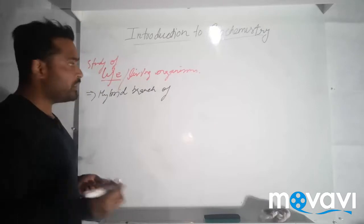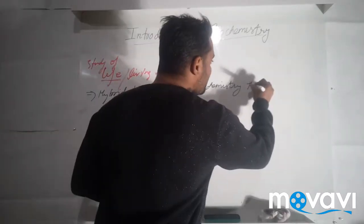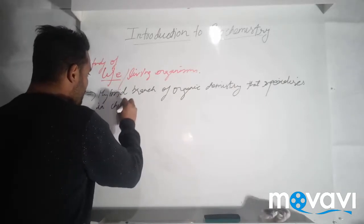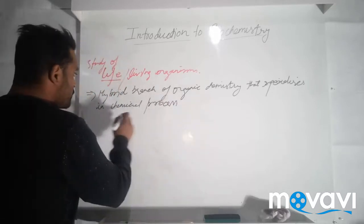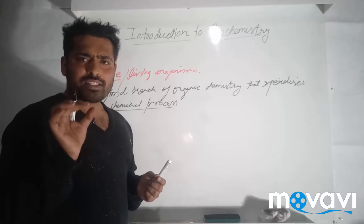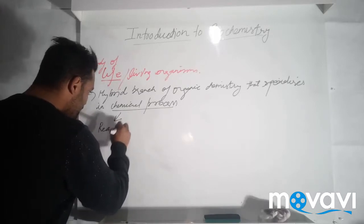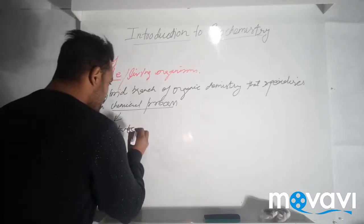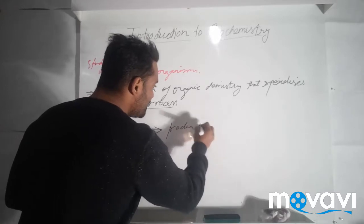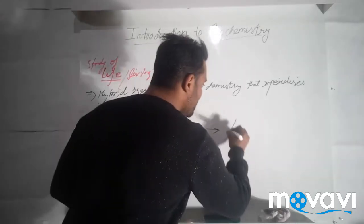Now listen to this point: chemical processes. In the whole biochemistry syllabus, you are going to see chemical processes again and again. You know what is the meaning of a chemical process? Chemical process simply means when reactants react with each other, they form some product. This is a chemical process, and this is also known as transformation.